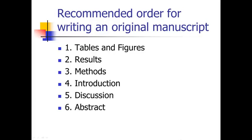If you do tables and figures first, then the next thing that follows naturally is writing your results section, because the tables and figures lead right into the results section — the results section is a summary of what's in your tables and figures. Then usually the next thing would be the methods. You can write the methods at any time since you've already done the experiments and you know what you did. I find the methods a little boring to write — it's not hard, you're just rehashing what you did — but I put that as the third step.